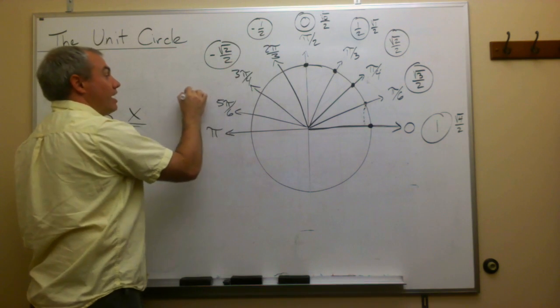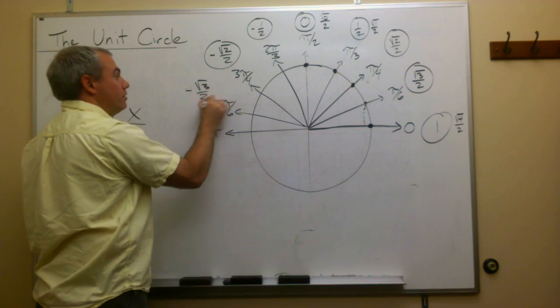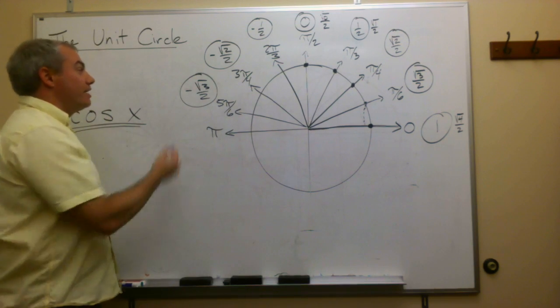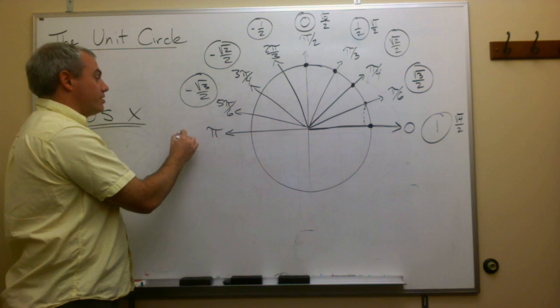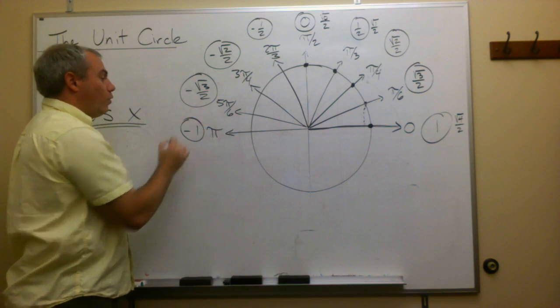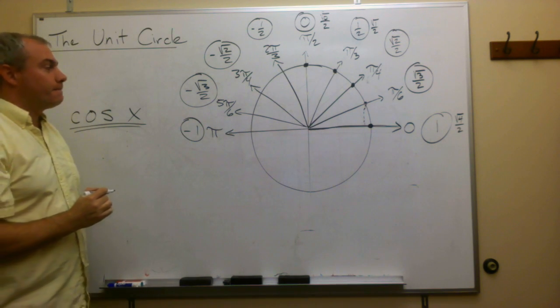What's next in the pattern? Negative square root of 3 over 2. What's next in the pattern? Negative square root of 4 over 2. But negative square root of 4 over 2 is just negative 1.